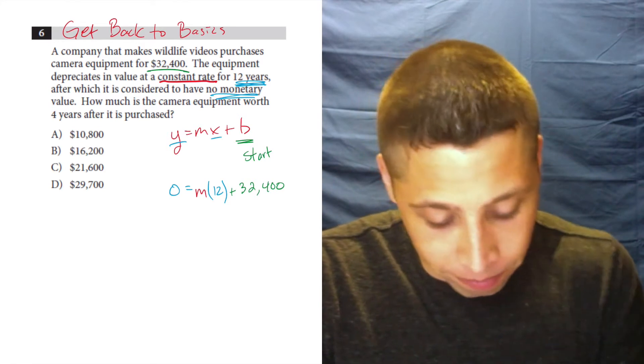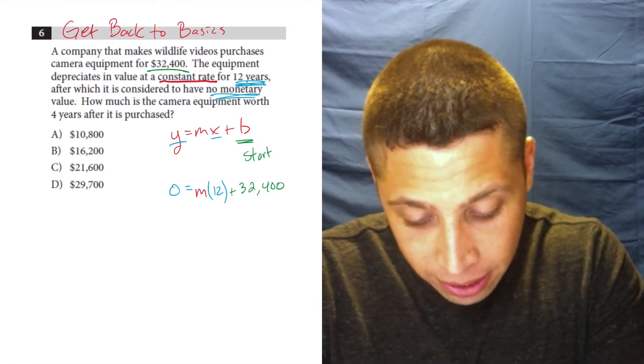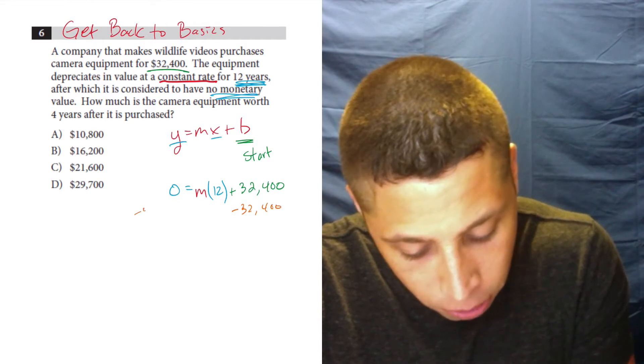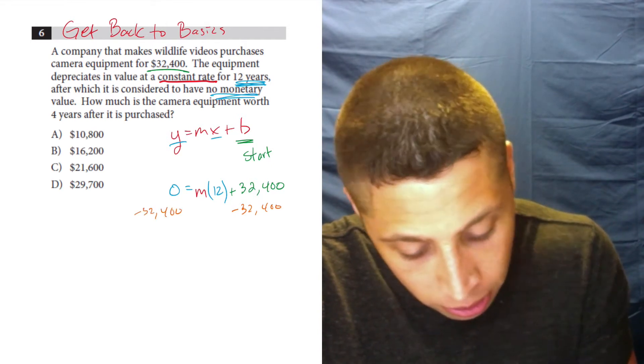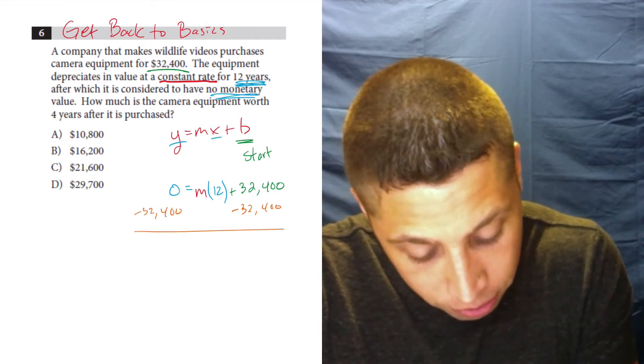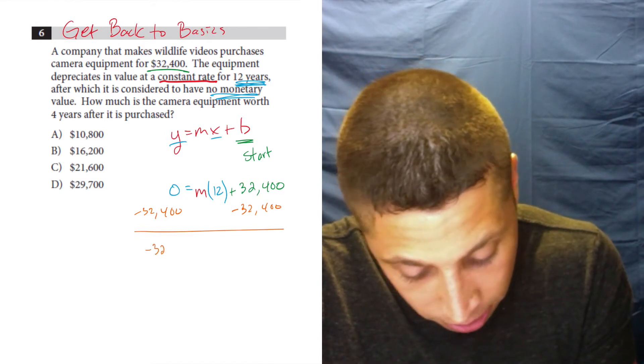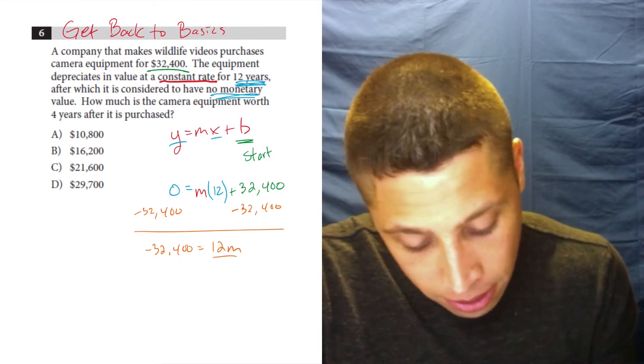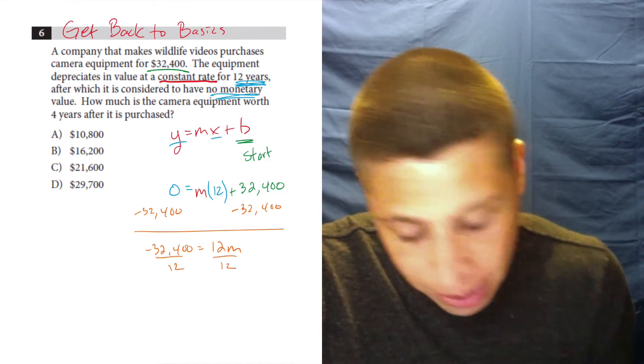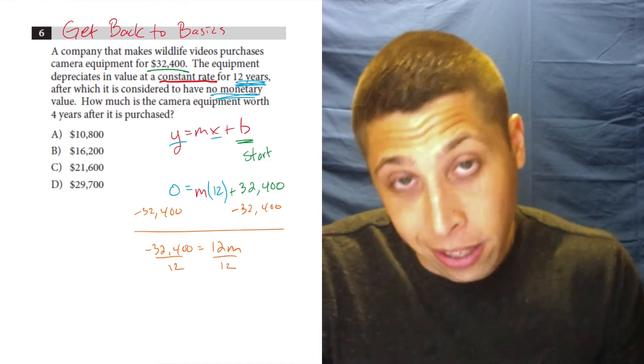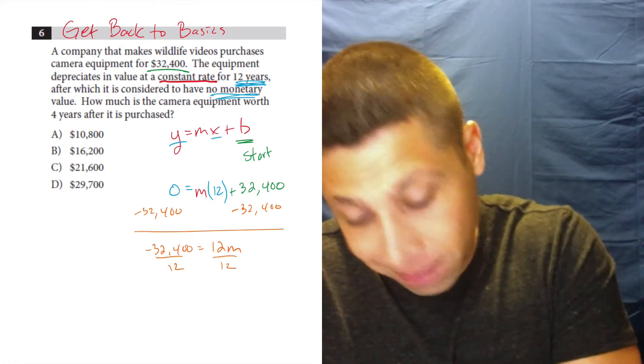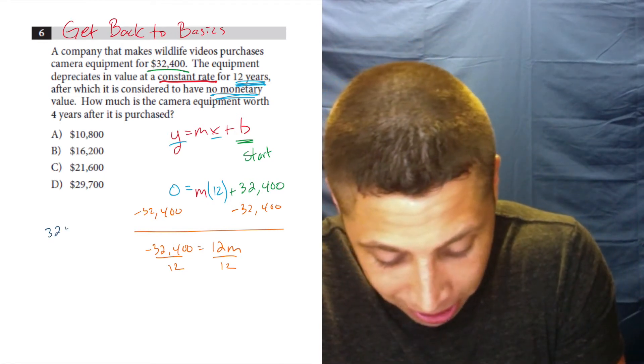It's getting a little messy, but it's doable. So if I clean this up a bit, what I would do is I'd move 32,400 over to here, and I would then have that equal to 12m, and I've got to divide by 12 to get m by itself. So it means I'm doing one of my least favorite things, long division.